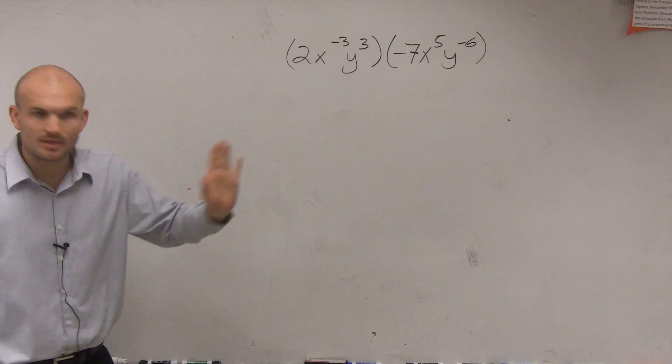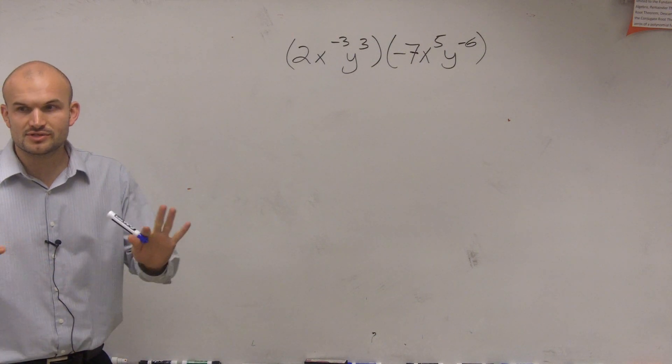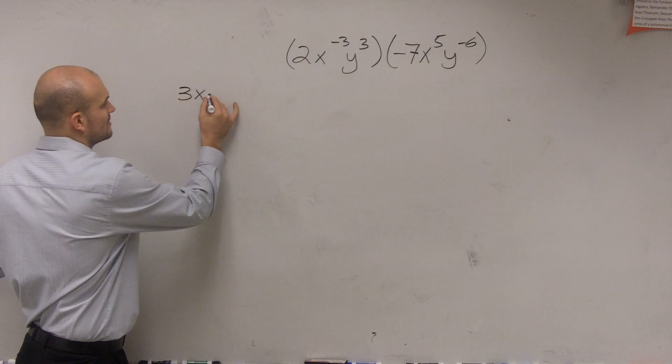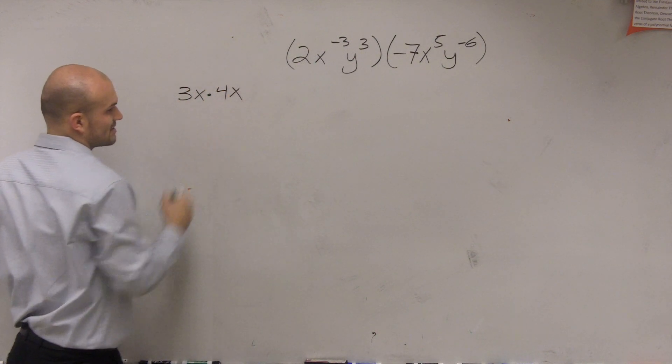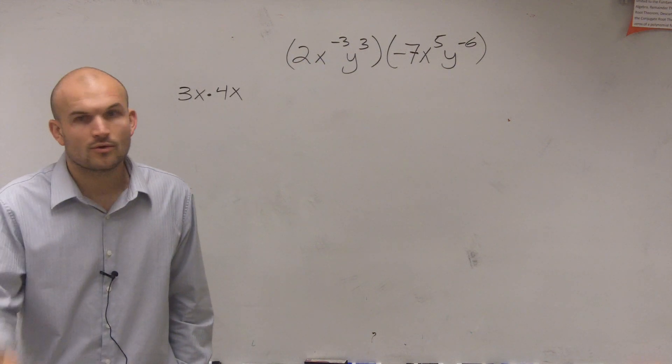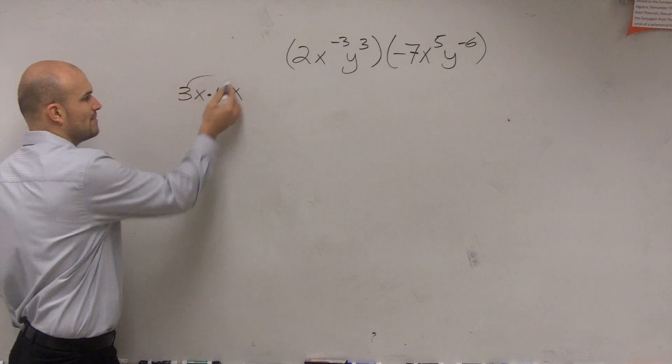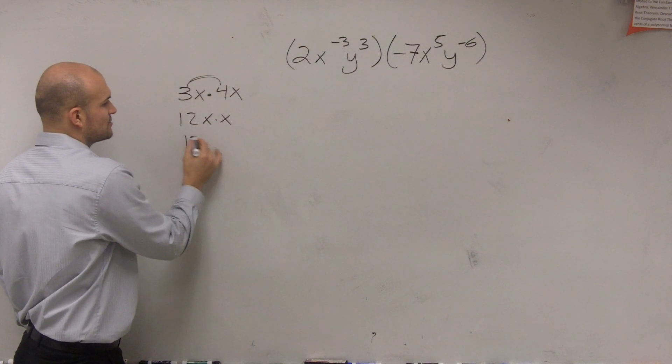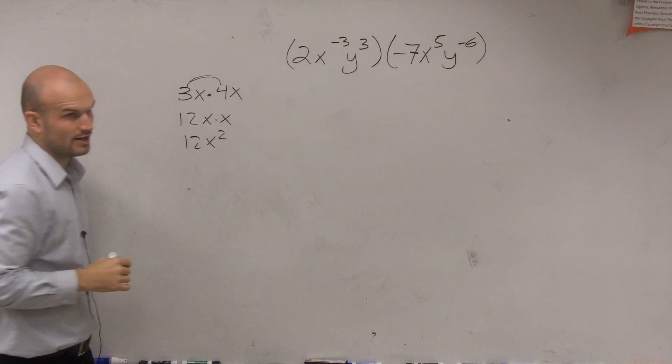Now, before we get any crazy, let's do something even simpler. What if I had to do 3x times 4x? This would have been something you would have been looking at in Algebra 2. When you guys did this, you would say, I can only multiply my 3 times my 4, which would be 12, and then x times x, which is 12x squared, right?